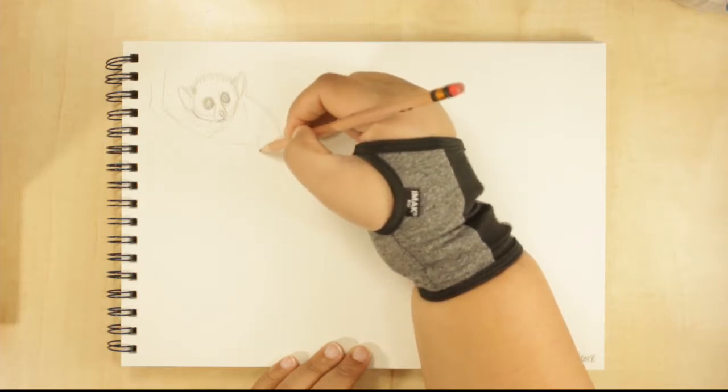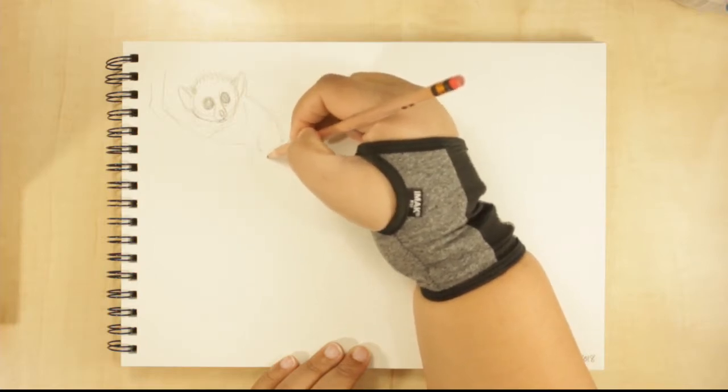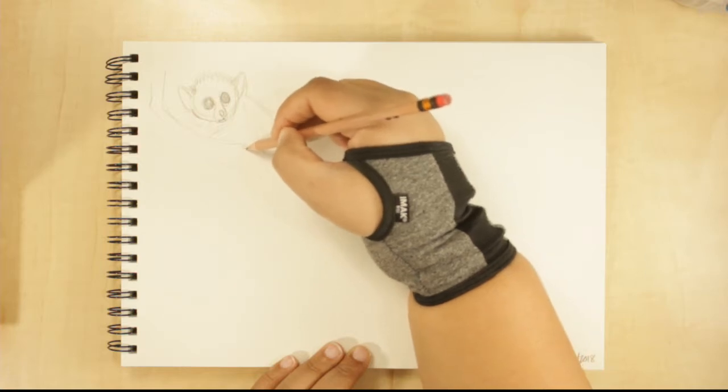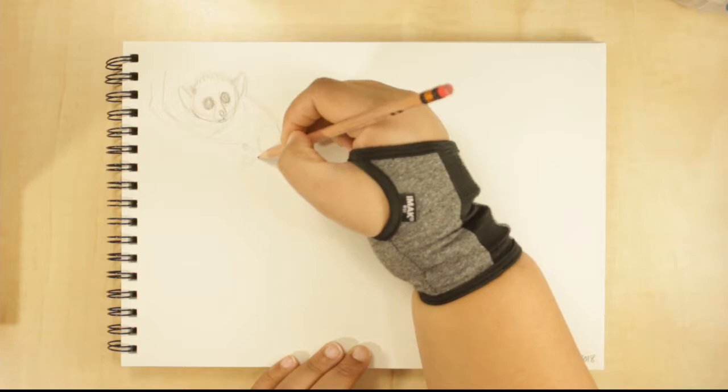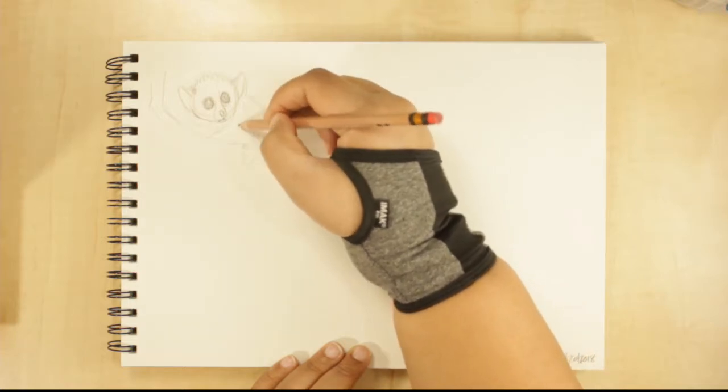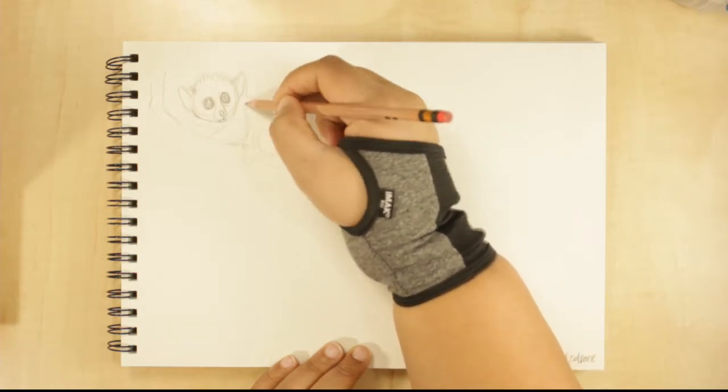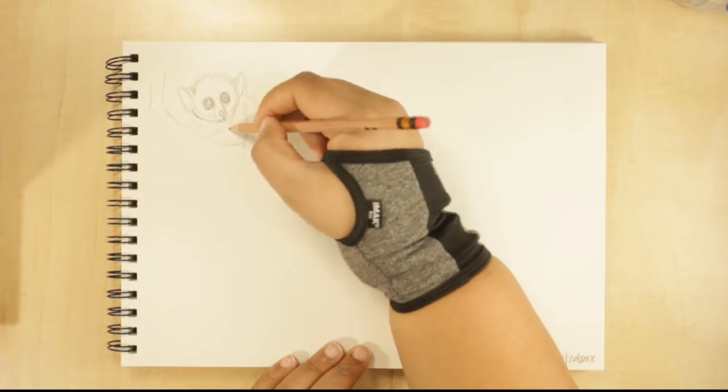Let's see if we can get the rest of him kind of blocked in here. This little back leg, and then he has little feet hands too. His elbow comes all the way down here, his little forearms.